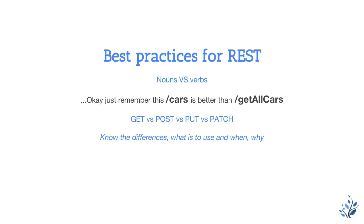Before going into REST development, we should properly understand the differences and use-case scenarios for GET, POST, PUT, PATCH, and DELETE. GET means you need to fetch an entity or resource based on input parameters, or list everything. POST means you are creating or acting on a resource. For updates, we should use PUT instead of POST, which is commonly misused. We should understand precisely the differences between GET, POST, PUT, PATCH, and DELETE.